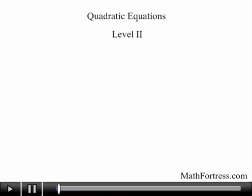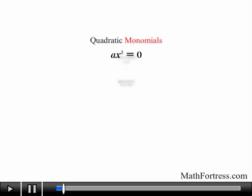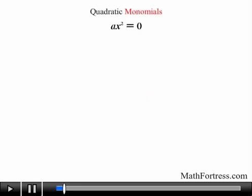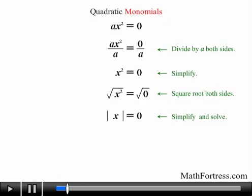Quadratic equations, level 2. In this video we will start solving quadratic monomials of the form ax squared equals 0 and quadratic binomials of the form ax squared plus c equals 0. The general procedure in solving quadratic monomials is to solve for x by getting rid of the coefficient a and then taking the square root of both sides of the equation.